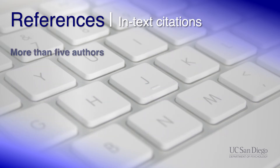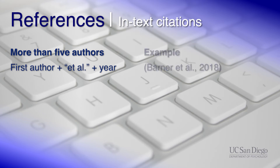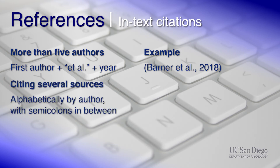If the source has more than five authors, then every citation of that source, including the first, should only include the last name of the first author, followed by et al. And if you want to cite several sources as a list, then you should cite them alphabetically by the last name of the first author, and with semicolons in between.